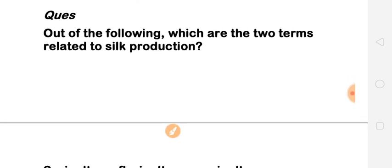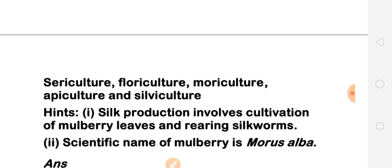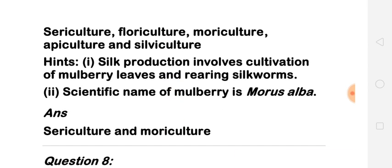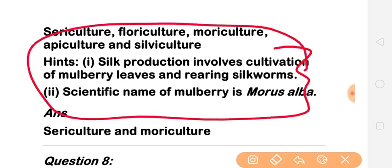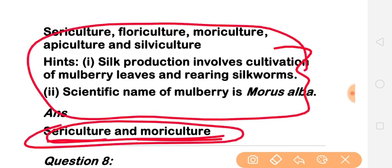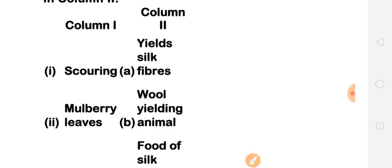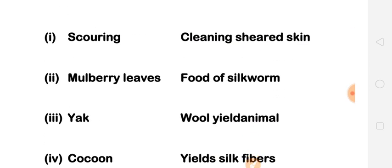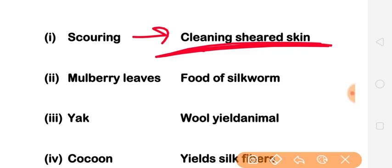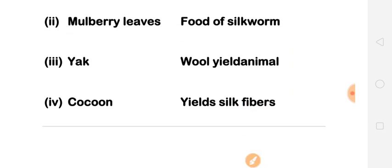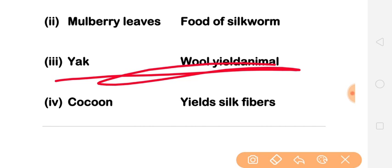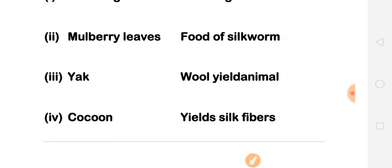Next: out of the following, which are the two terms related to silk production? The answers are sericulture and moriculture — these are the terms related to the silk production process. For the column matching question, scouring means cleaning the sheared skin. Mulberry leaves are the food for silkworms, which produce silk fiber.